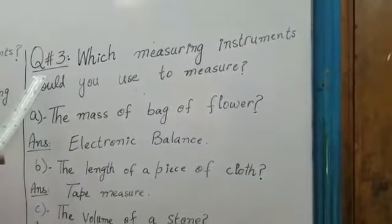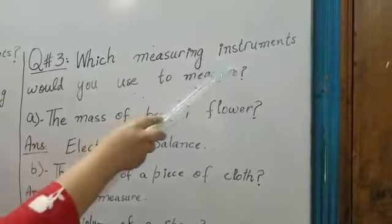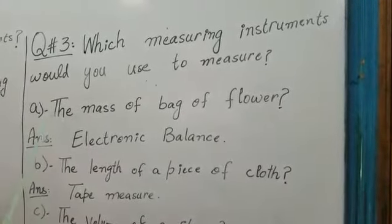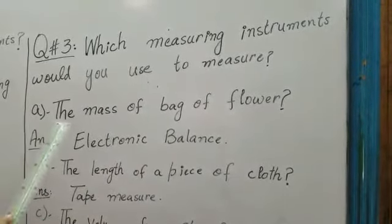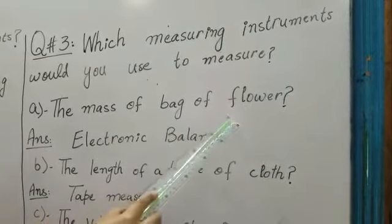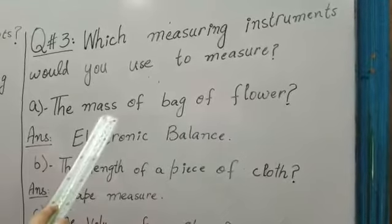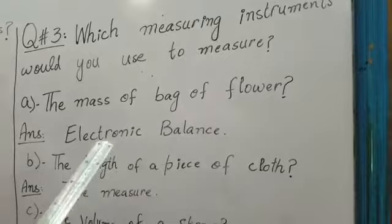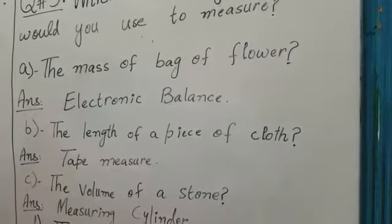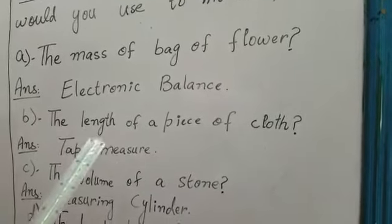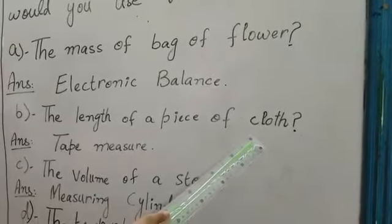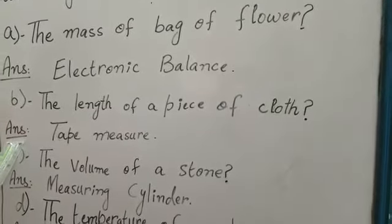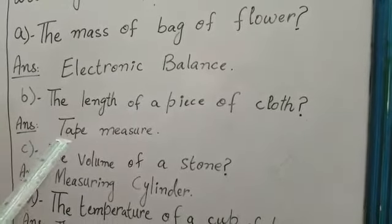Now, for question No. 3 Which measuring instruments would you use to measure? A part is the mass of a bag of flour. Our answer is electronic balance. Second is the length of a piece of cloth. Our answer is tape measure.